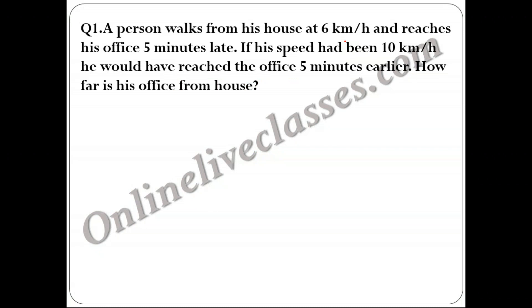Question 1: A person walks from his house at 6 km/hr and reaches the office 5 minutes late. If his speed had been 10 km/hr, he would have reached the office 5 minutes early. How far is his office from his house? So the man going at 6 km/hr is 5 minutes late, and at 10 km/hr he is 5 minutes early.